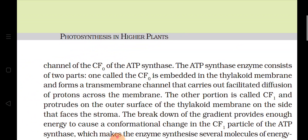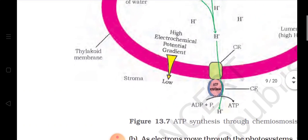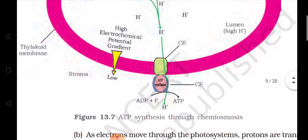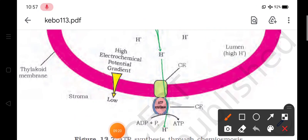Agar ab hum diagram dekhte hain, toh diagram ke andar humain ATP synthase naam ka ek enzyme nazar aa raha hai. As I am showing you in the diagram — see here, this is ATP synthase. Yeh jo enzyme hai, yeh ATP synthase enzyme hai, aur yeh enzyme ATP synthase enzyme jo hai, it will help in the breakdown of this proton gradient.